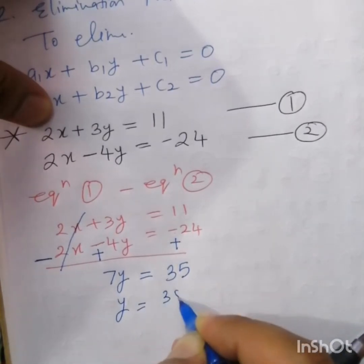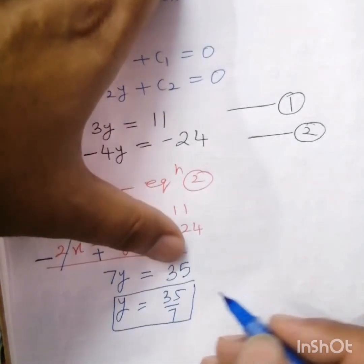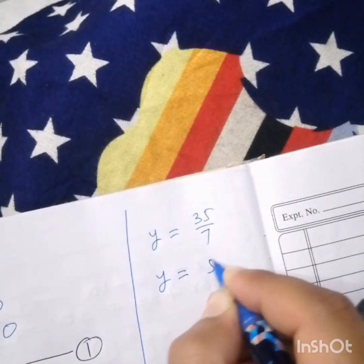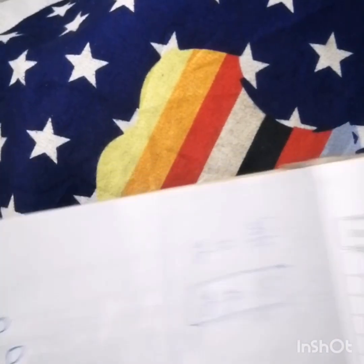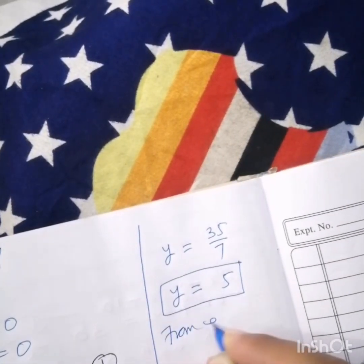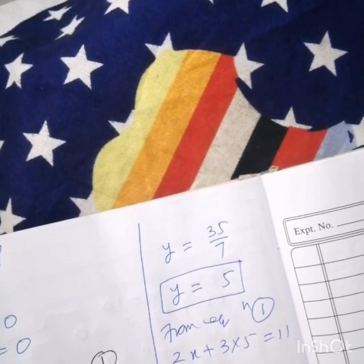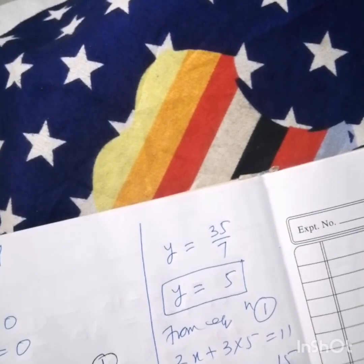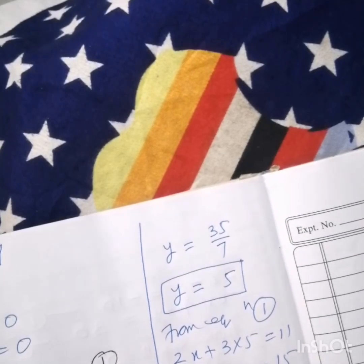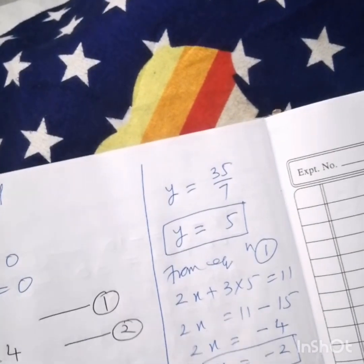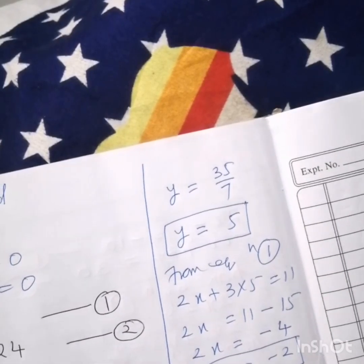So 7y equals 35, meaning y equals 35 divided by 7, which is y equals 5. We eliminated x and found y. Now from equation one: 2x plus 3 times 5 equals 11, so 2x equals 11 minus 15 equals minus 4, and x equals minus 2. Hence x equals minus 2 and y equals 5.